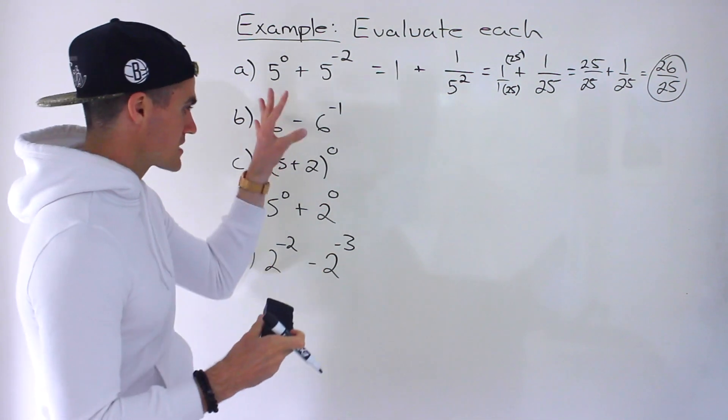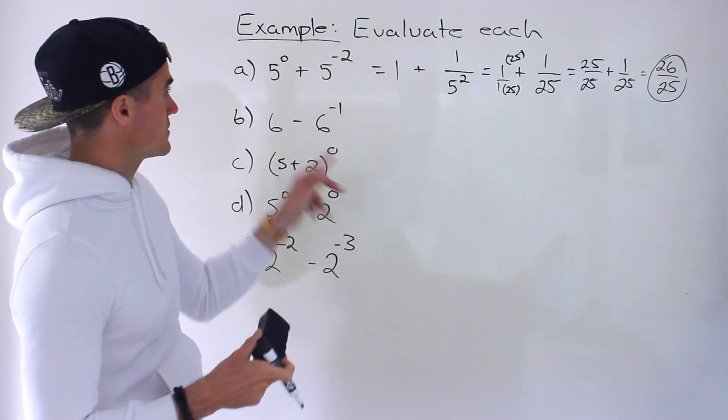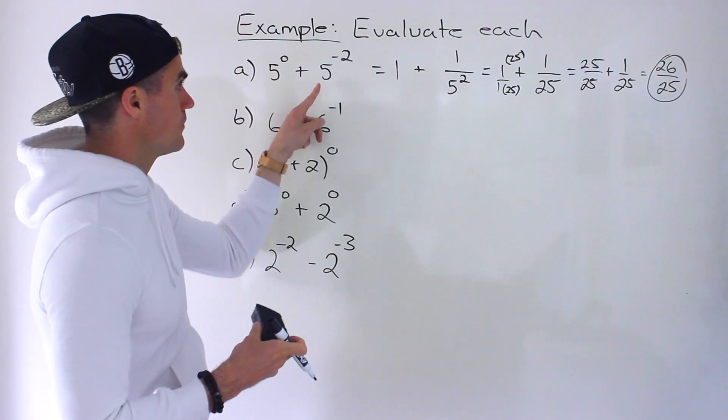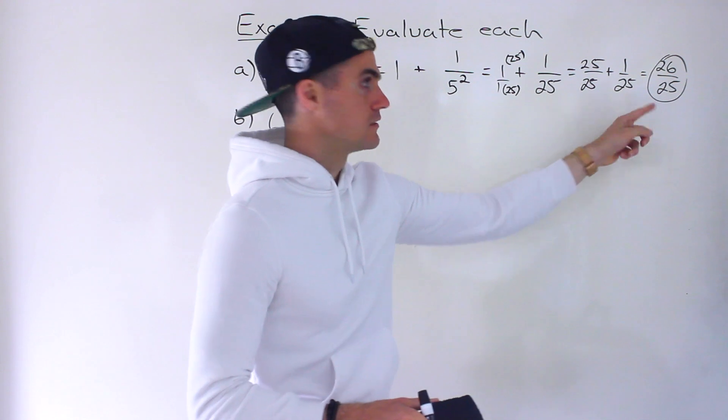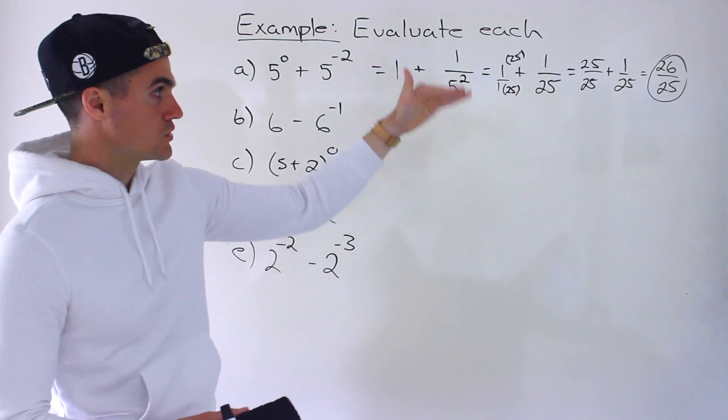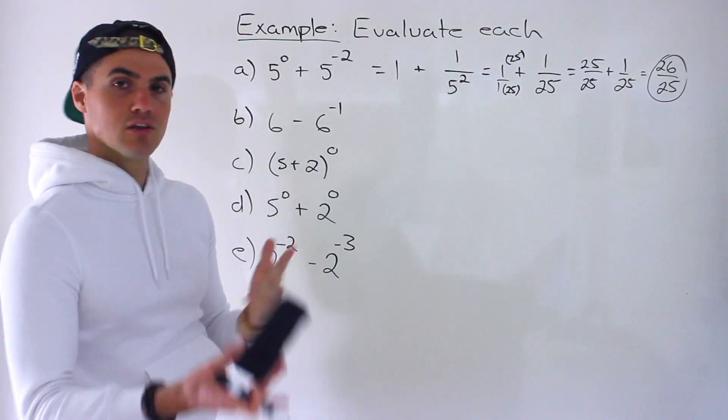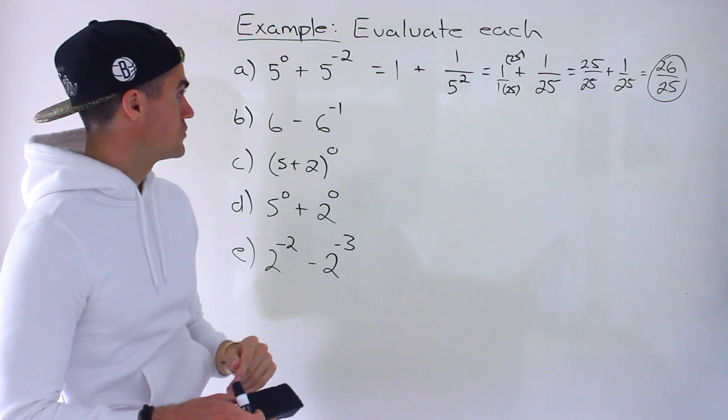And if you get the time, if you get something like this on the test, you could check your answer. You could plug this into your calculator. It'll probably give you a decimal value. And you could plug this in, also will be a decimal value, 26 divided by 25. And you could just make sure that those values are the same.